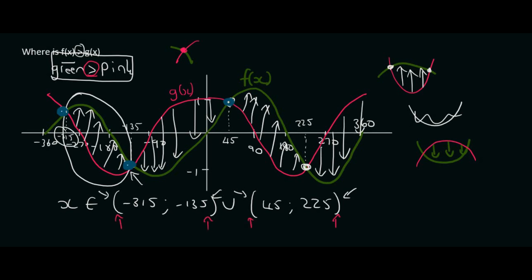If, however, they said where is the green graph bigger than or equal to the pink graph, then I would have included these points, because then at those points the two graphs are equal to each other.